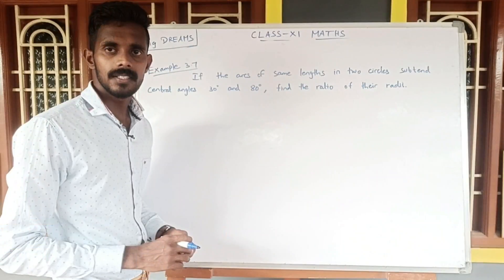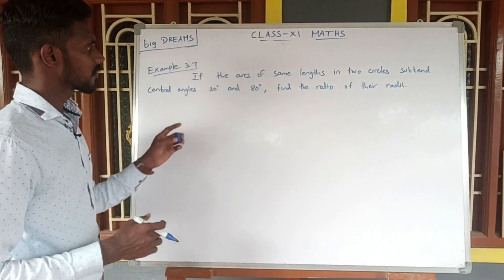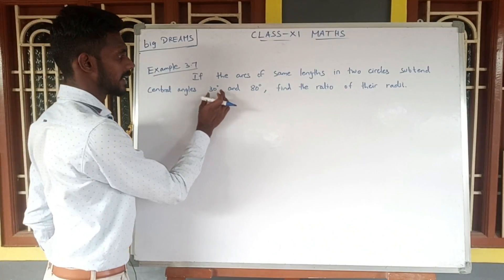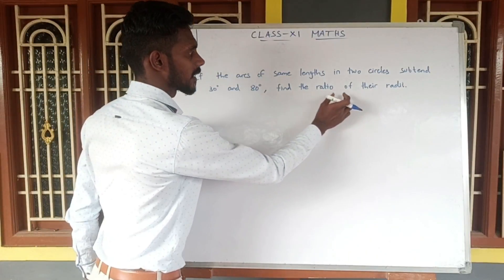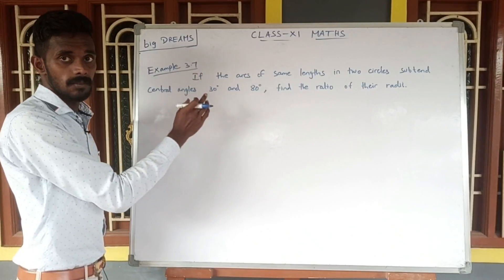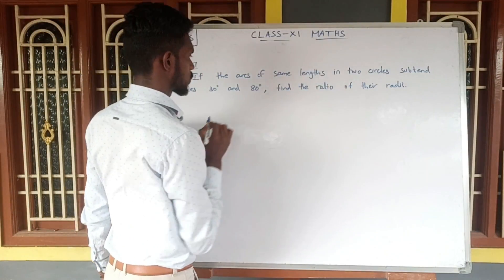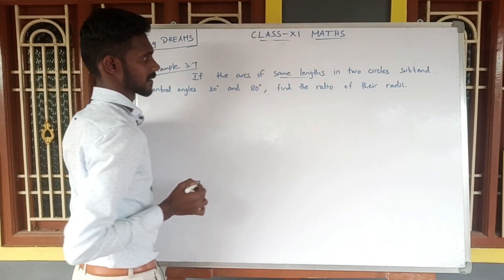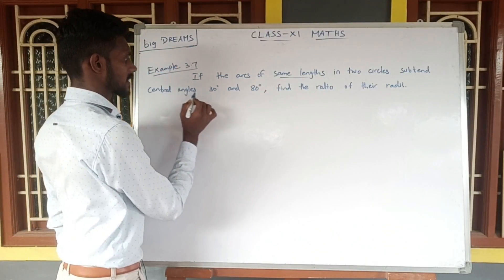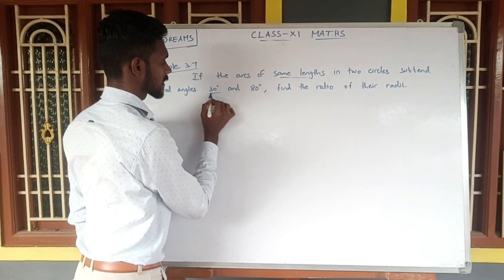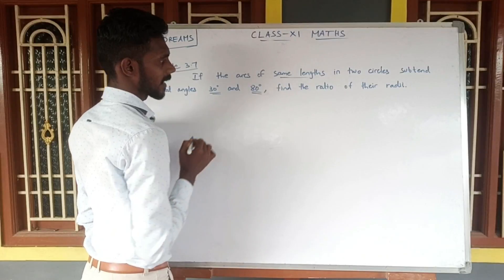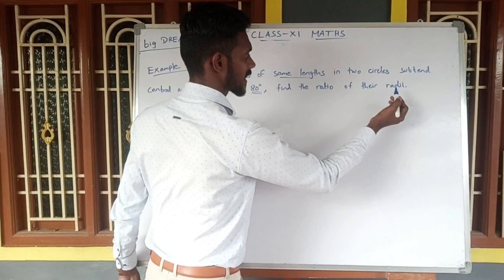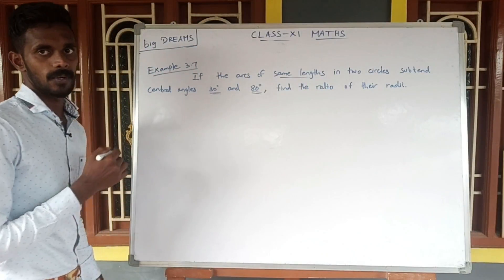Next, let us see example number 3.7. If the arcs of the same length in two circles subtend central angles of 30 degrees and 80 degrees, find the ratio of their radii. So we have two circles — first circle and second circle — and we will find their radius ratio.